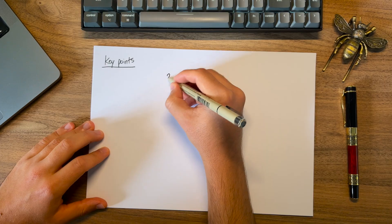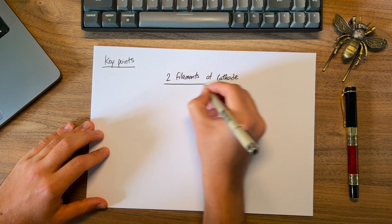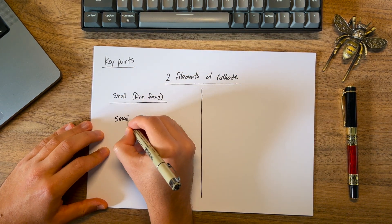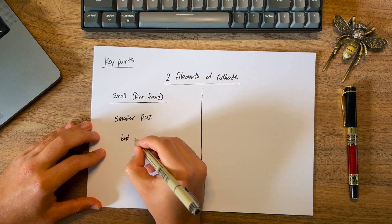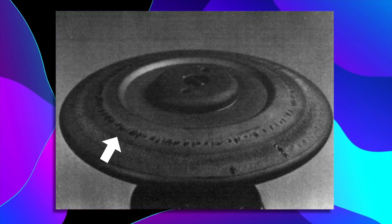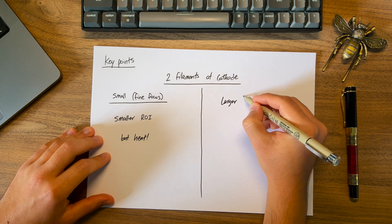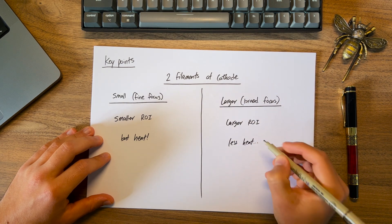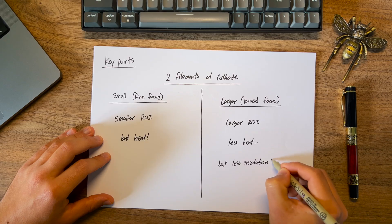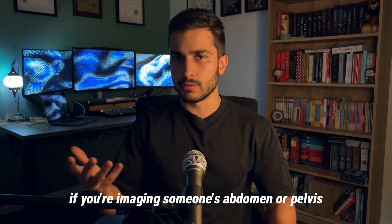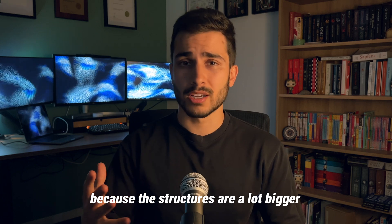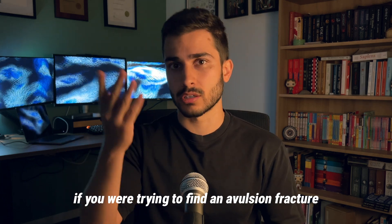So what have we learnt? The cathode has two filaments: a small and a large. The small one — aka fine focus — is used for smaller areas and results in better resolution, but at the cost of heat and tube degradation, meaning the anode surface gets disrupted which can interfere with x-ray production. The large filament — aka broad focus — is typically used for larger areas with reduced heat impact on the anode, but at the cost of some sharpness. If you're imaging someone's abdomen or pelvis, you don't really need fine resolution, unlike when trying to find an avulsion fracture in someone's finger.